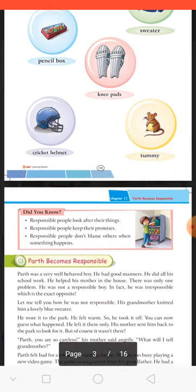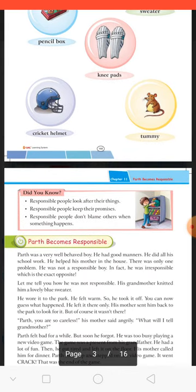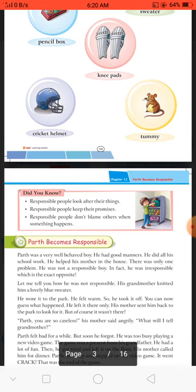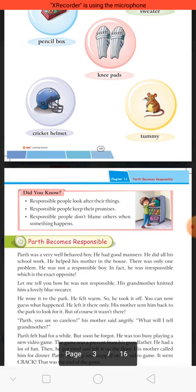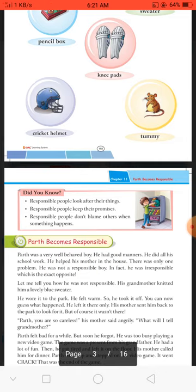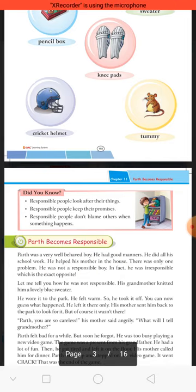Before starting our lesson, we will discuss 'Did You Know?' Responsible people look after their things. Jo zimmedar vyakti hote hain, wo apni cheezon ki dekhbhal karte hain. Responsible people keep their promises — agar wo kisi se koi promise ya wada karte hain to usse nibhate hain. Responsible people do not blame others — ek responsible vyakti kabhi doosron ko blame nahi karta. Agar kuch unke saath galat hua to wo khud accept karte hain.